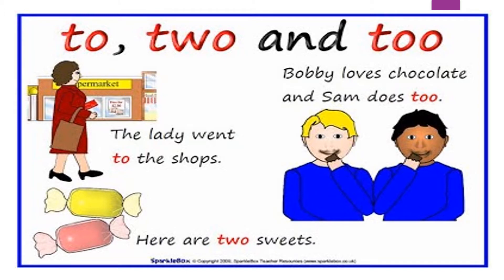The last one is T-O-O (too). It means 'bhi' in Hindi. For example: 'Bobby loves chocolate, and Sam does too.' Bobby ko chocolate bahut pasand hai aur Sam ko bhi pasand hai. So children, we have seen three words whose spelling and meaning are different but their sound is the same.